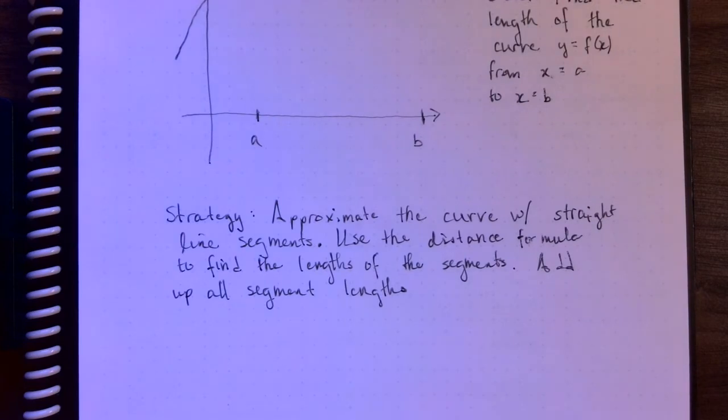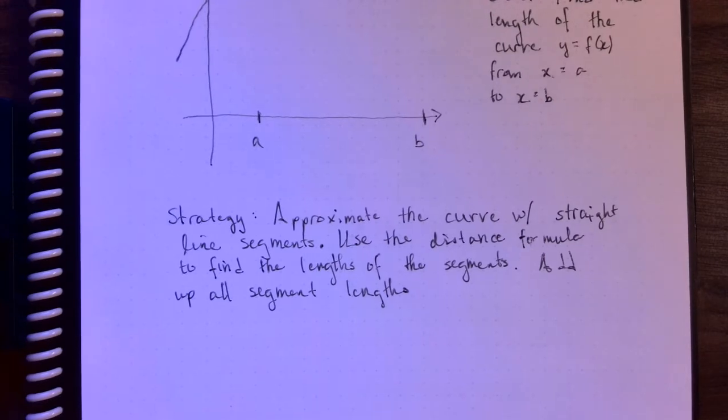Our strategy is we will approximate the curve with some straight line segments, and once we've got those straight line segments, we can use the distance formula to find the lengths of those segments, and then we'll add up all the segments to get an approximation for the total length of the curve.